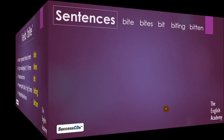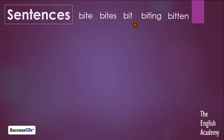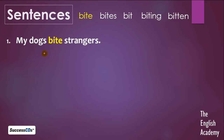Now let us use these words in sentences so that you can understand how to use them. First is bite — jab hum present tense mein sentence banayenge: 'My dogs bite strangers.' Mere kutte ajnabiyon ko kaatate hain. Tab hum root form use karenge — bite.